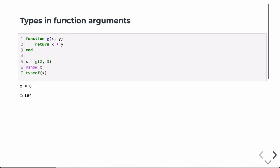We already looked at types with respect to function arguments, but let's take a deeper dive. If we define a function g that takes two arguments X and Y and returns their product, when we first call the function on line five with the values two and three — both Int64 by default — Julia notices both arguments are Int64 and compiles a version of this function for that. Multiplying two Int64s returns an Int64, so the result six is of type Int64.